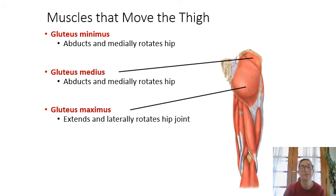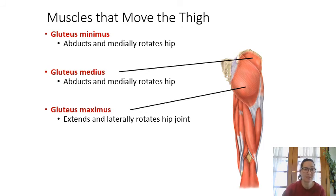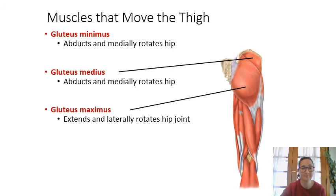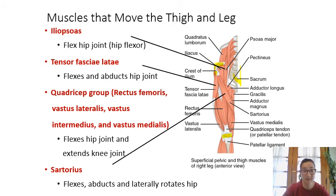Moving to the leg: muscles that move the thigh include the gluteus muscles. Gluteus maximus is the large one that extends the hip and can also laterally rotate it. Gluteus medius and gluteus minimus are important for hip abduction — pulling the hip away and medially rotating it. On the anterior thigh, iliopsoas is a combination of iliacus and psoas major, and it is the primary hip flexor.